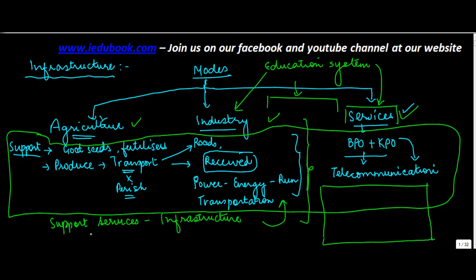All these basically fall within the infrastructure. Infrastructure refers to anything which provides support services to the main areas — the main areas being agriculture, industry, and services.